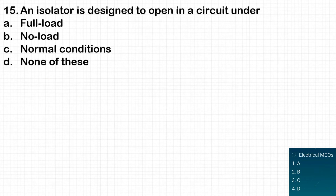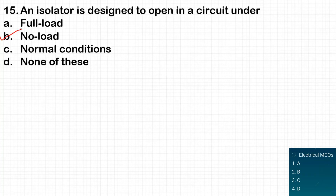The next question: an isolator is designed to open a circuit under which condition? Isolators are always operated under no-load conditions — meaning no current is flowing through the circuit. This is the scenario when we can make the isolator open to disconnect one part of the circuit from another. So option B is the correct answer.